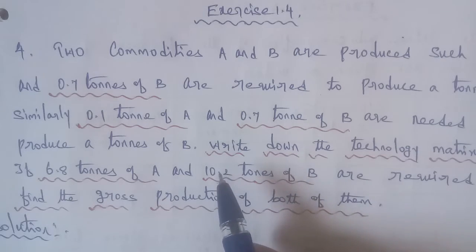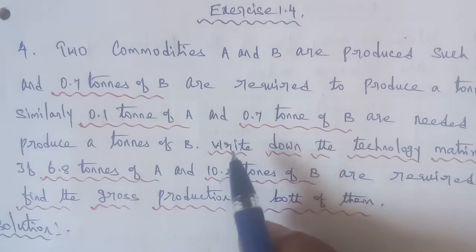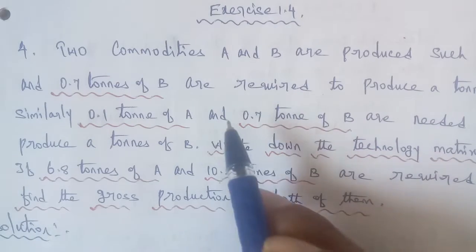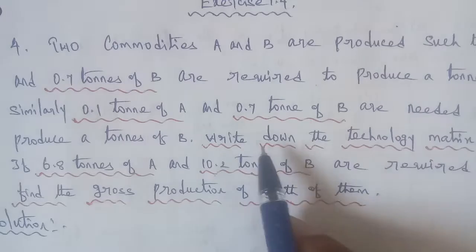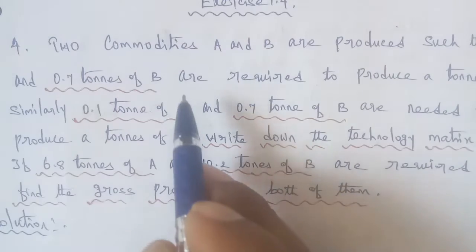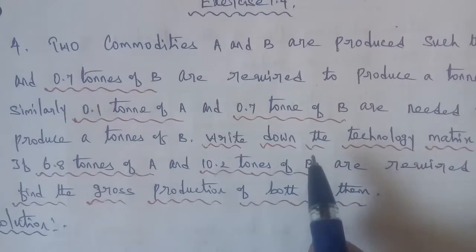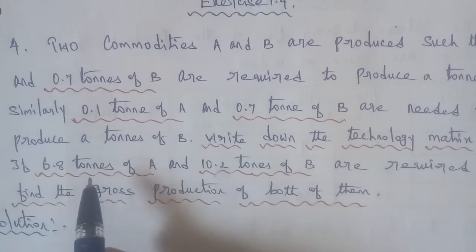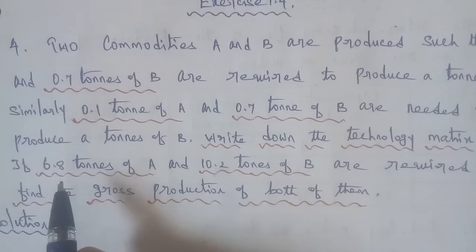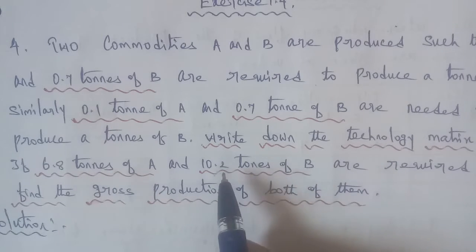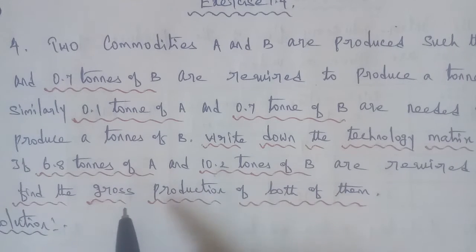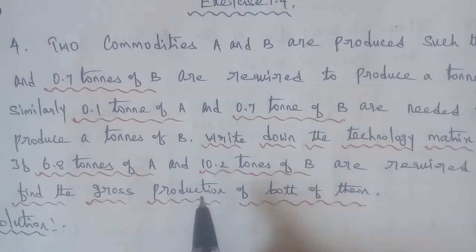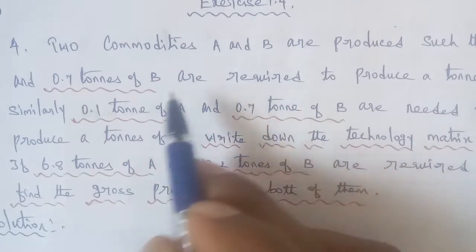Remember the technology matrix — it is a 2-row, 2-column matrix. From the given question, we will form the technology matrix, and using the demand values 6.8 and 10.2, we will find the gross production. We are going to start with the technology matrix.